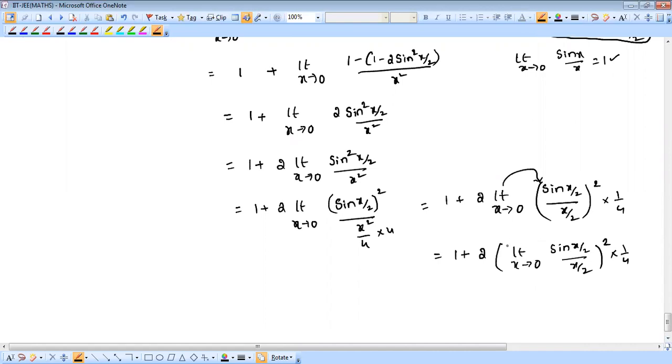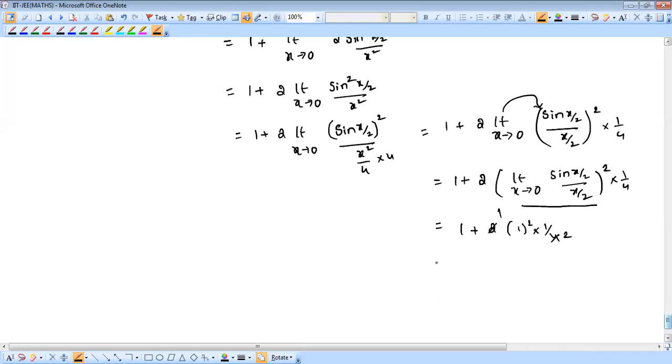You may think how can function go inside? Here, function can go; values cannot go. Now if you apply the same formula: limit x tends to 0, sin x by x is 1. Same thing: limit x tends to 0, sin x by 2 by x by 2 is 1 only. 1 plus 2 into 1 square into 1 by 4. 1 square is 1, 1 into 1 by 4 is 1 by 4. 2 into 1 by 4 is 1 by 2. So 1 plus 1 by 2 is 3 by 2.